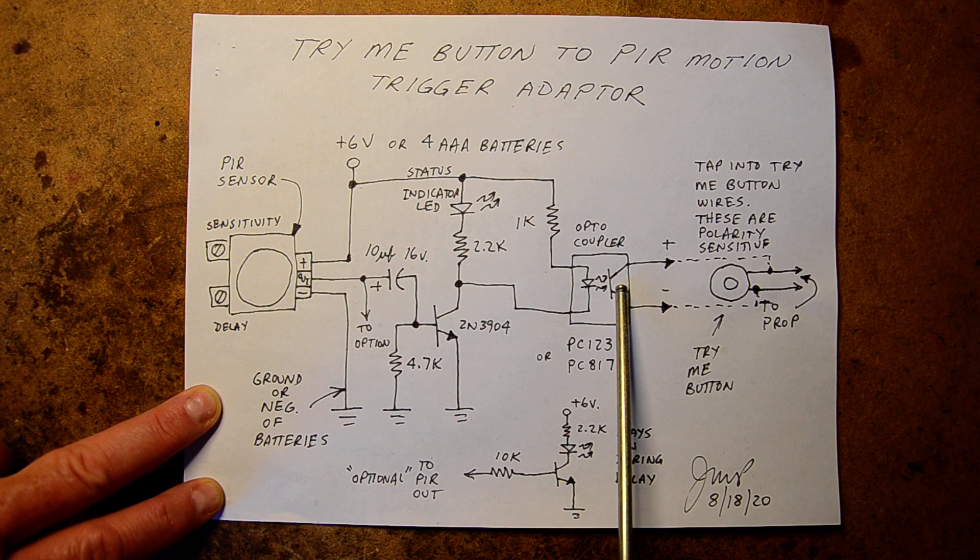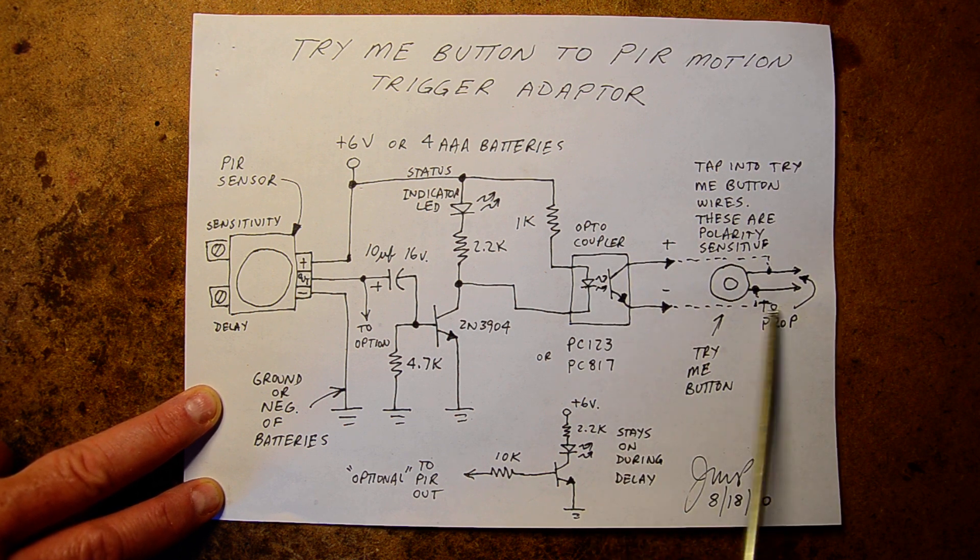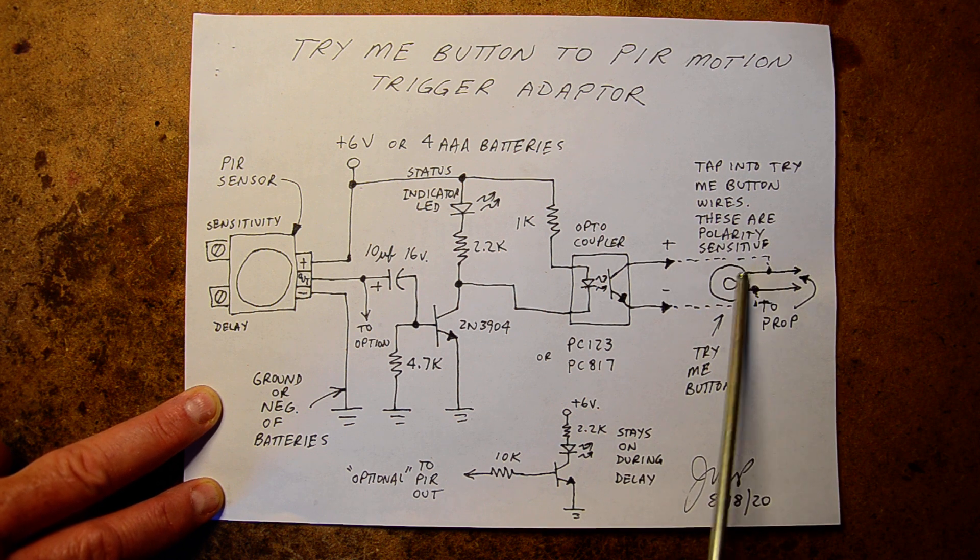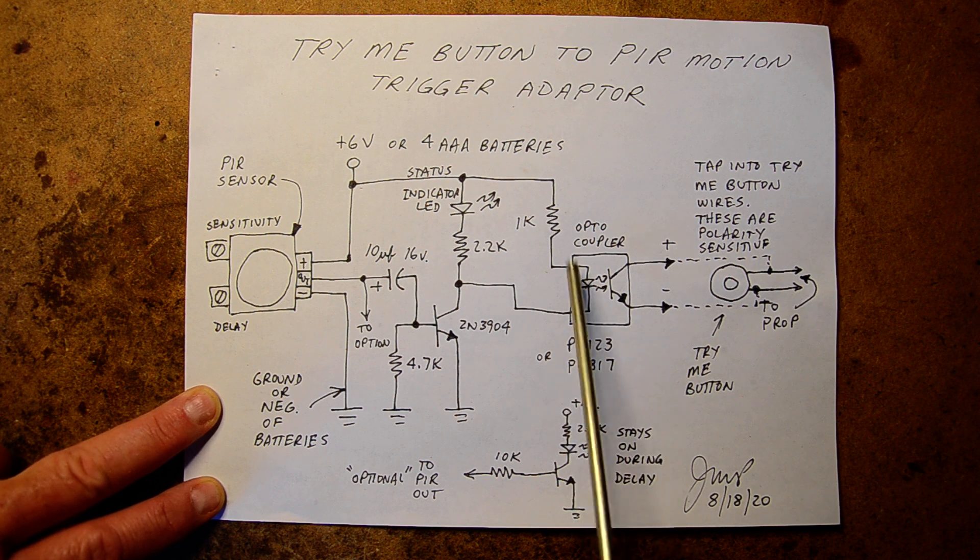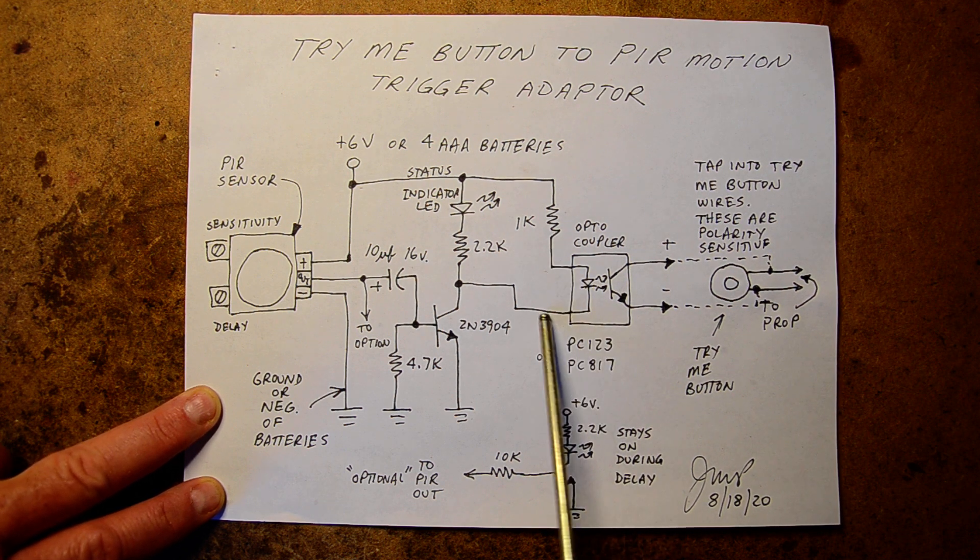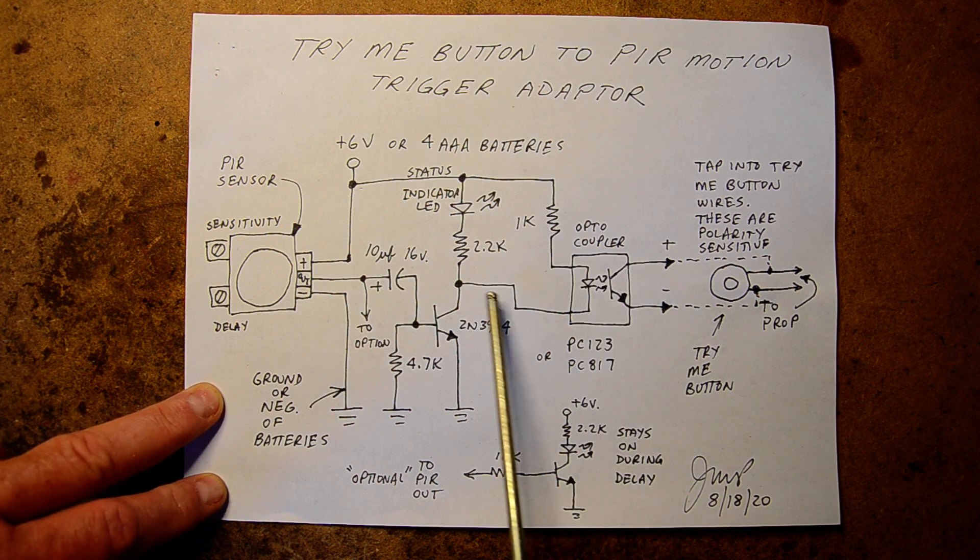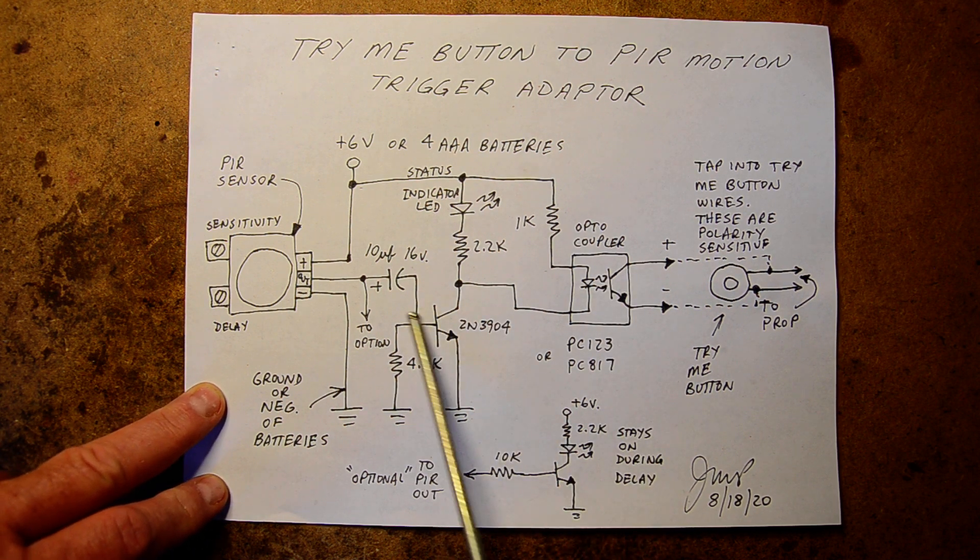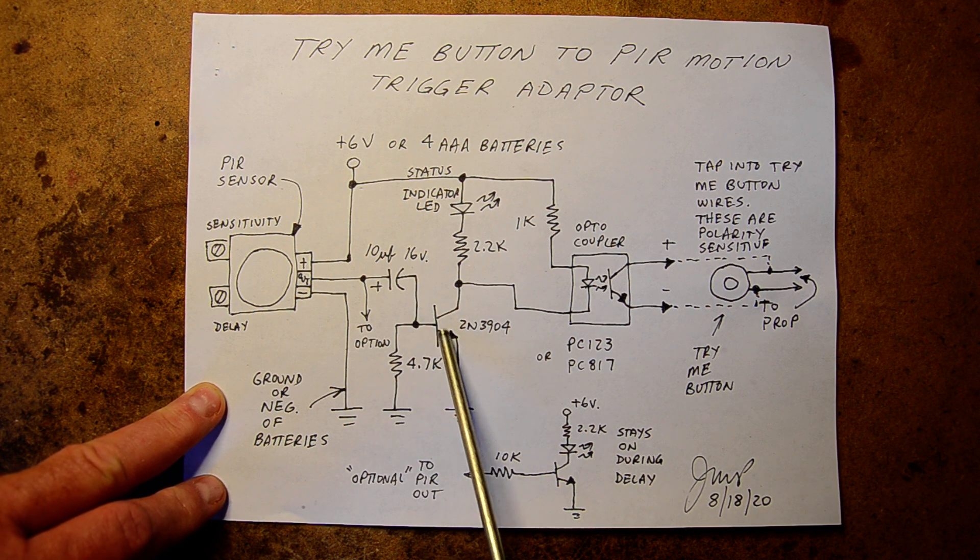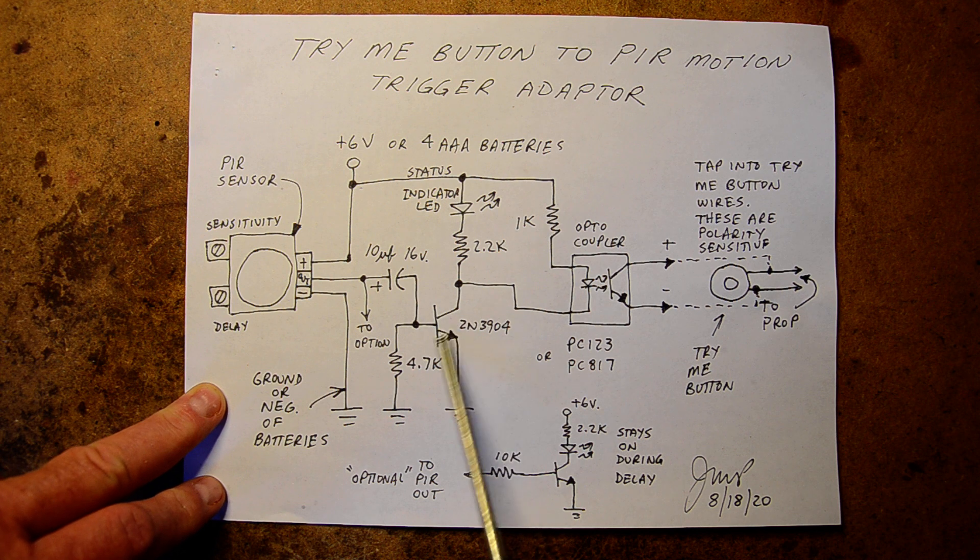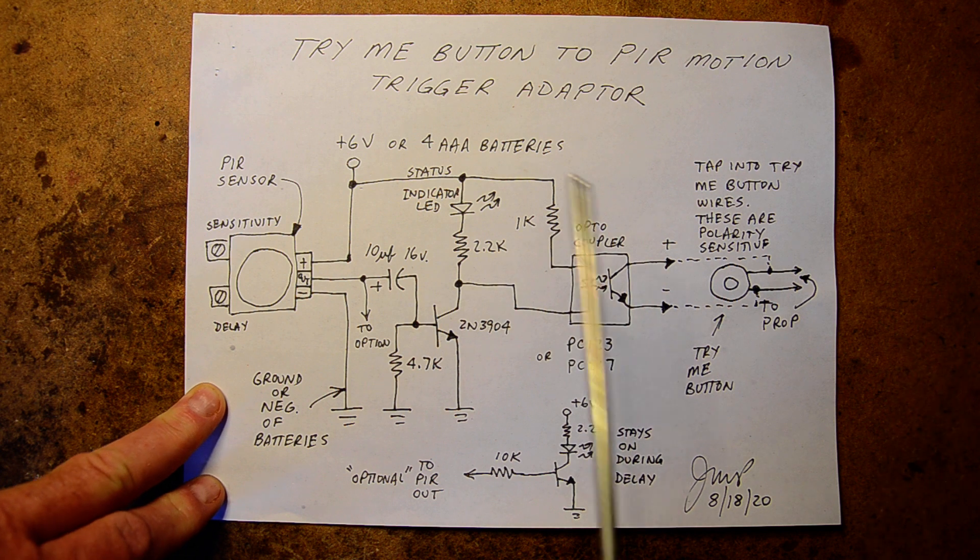The optocoupler is optically coupled to an output transistor. The output transistor gets directly tied in parallel to your try-me button. You can look up the parts and pinouts. There's the input, which is the infrared LED, and the output is this transistor that's activated by light. Once this turns on, I also have this transistor at the base of this transistor so any electrical noise won't false trigger this and activate the show by simulating a button push when it's not intended.